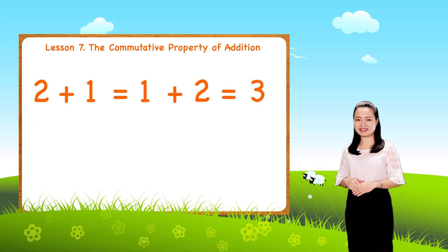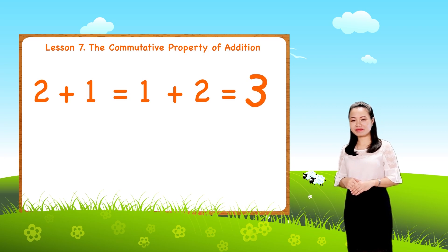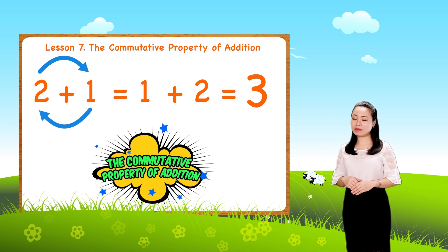Look, when we swap the numbers over, the sum doesn't change. This is the commutative property of addition.